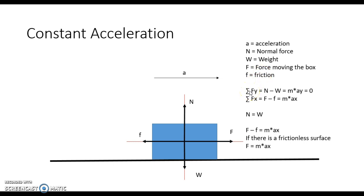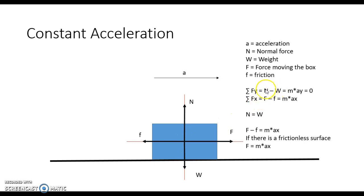Using Newton's law, the summation of forces in the y direction — since we have only two forces in the y direction — is going to be equal to N, which is our normal force going in the positive direction, minus W, our weight going in the negative direction. That equals mass times acceleration in the y direction. The box is not moving in the y direction.